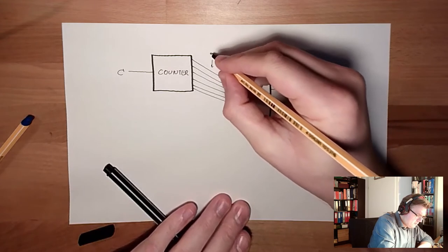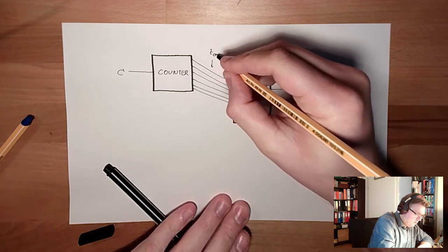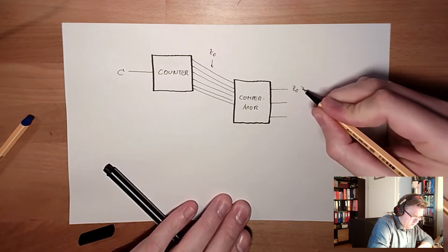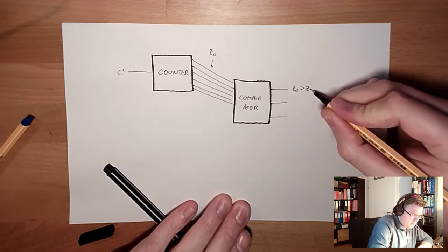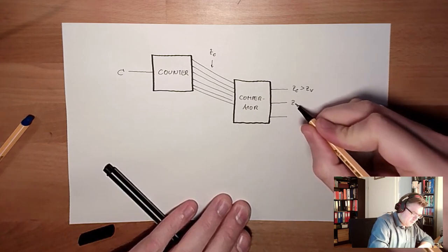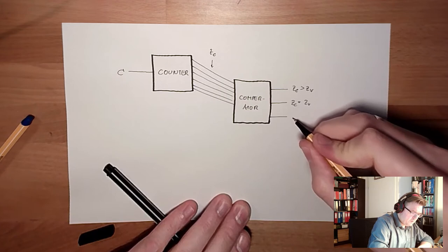So this is the counter value. And this maybe means the counter value is bigger than the pre-selected value. This maybe means the counter value equals the pre-selected value.